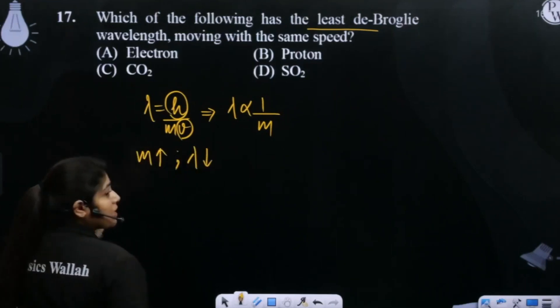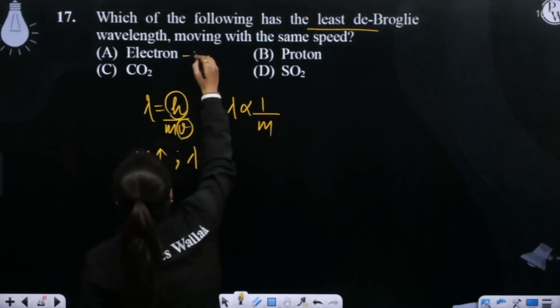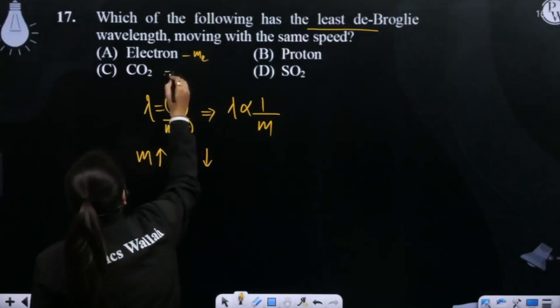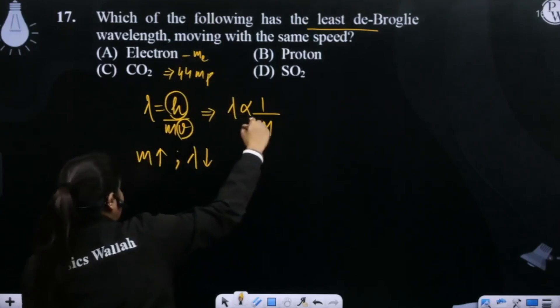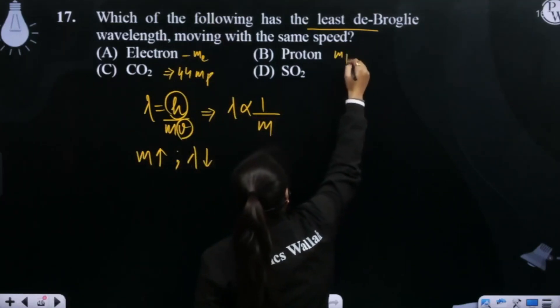So we can calculate the mass. Electron's mass, whatever you can write. CO2's mass is 44 times the mass of the proton. Proton's mass is mass of the proton.